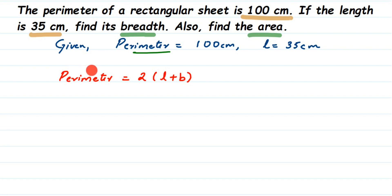We know perimeter is 100, so on the left hand side you put 100. So this is 100 equals 2 into - we know length is 35, substitute that - plus B. We don't know B, we need to find it, so write down B here.